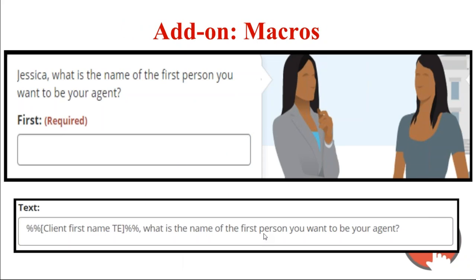Another add-on is variable macros. The other handout included covers variable macros and functions from last month's training — I also posted that video on our YouTube channel from August. A variable macro is a way to use information the end user has given you to personalize subsequent questions. So for example, instead of just saying 'client, what is the name of the first person you want to be your agent?' — or not using the name at all — you can use 'Jessica,' which is what I entered when asked my name, and now it can use that information later.